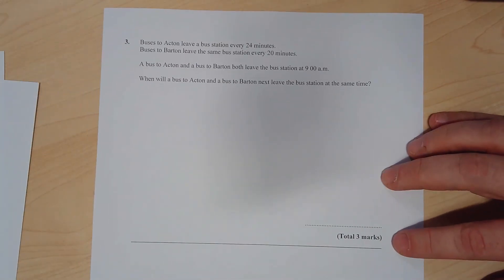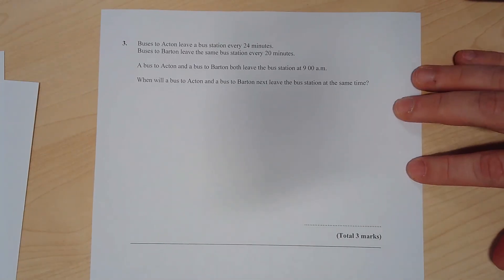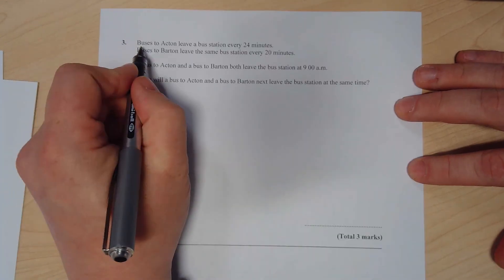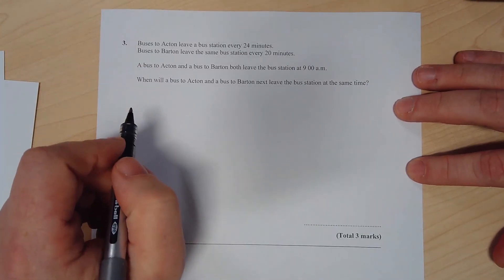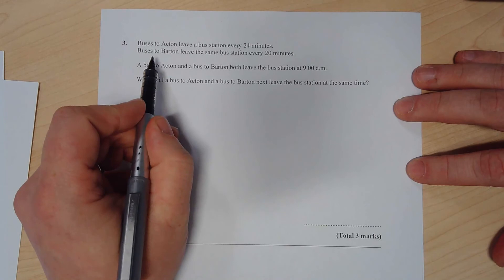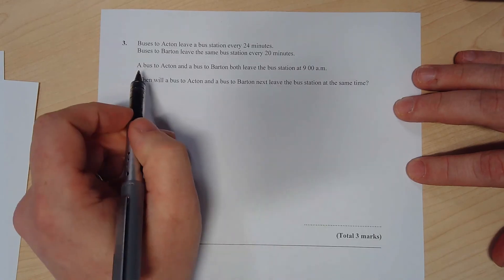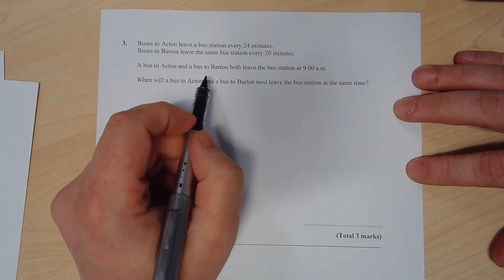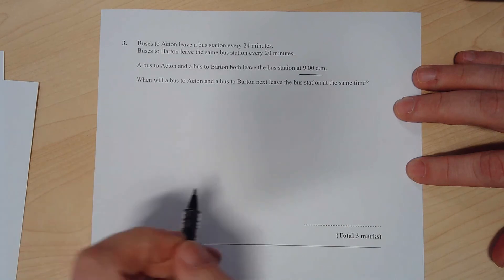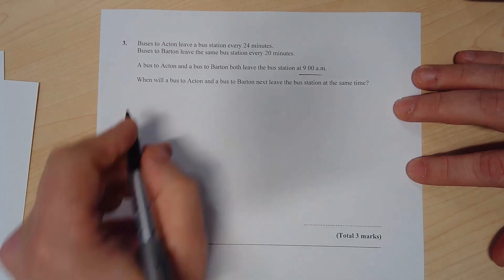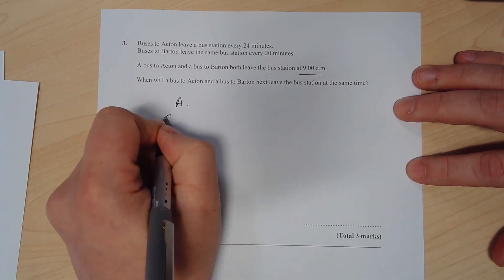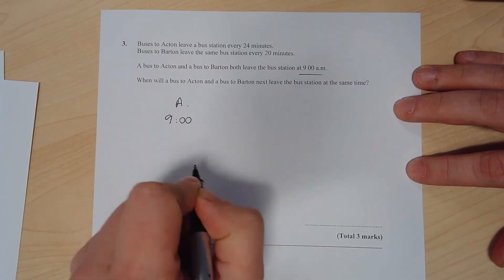Question 3: You've probably seen this in the lesson at some point because we use it pretty much every year. Buses to Acton leave a bus station every 24 minutes. Buses to Barton leave the same bus station every 20 minutes. A bus to Acton and Barton both leave the bus station at 9 o'clock. When will the next time that the buses both leave at exactly the same time? Easiest way of doing this is just list some numbers. So buses to Acton go every 24 minutes: 9 o'clock is the first bus, next bus at 9:24, next bus at 9:48.